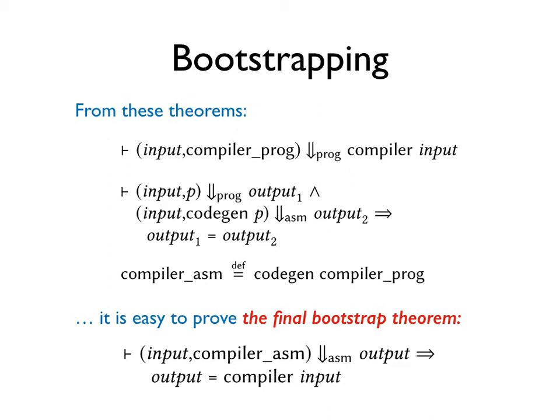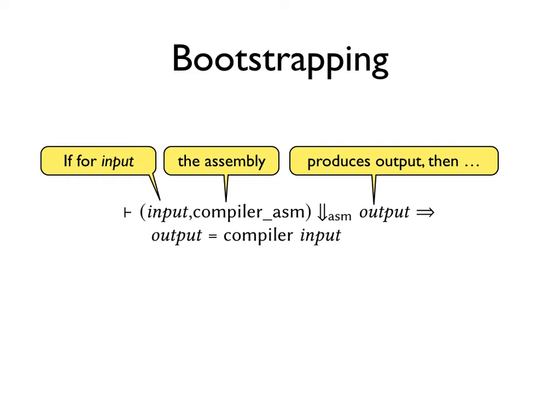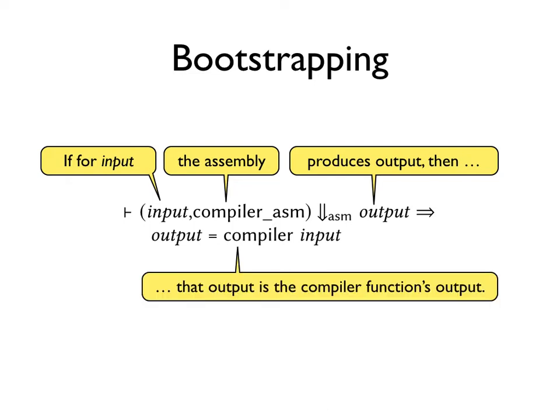Let's have a look at what the bootstrap theorem says. If, for INPUT, the assembly produces some output, called OUTPUT, then that output is the compiler function's output. In other words, the assembly implementation of the compiler, that is compiler_ASM, behaves like the compiler function.